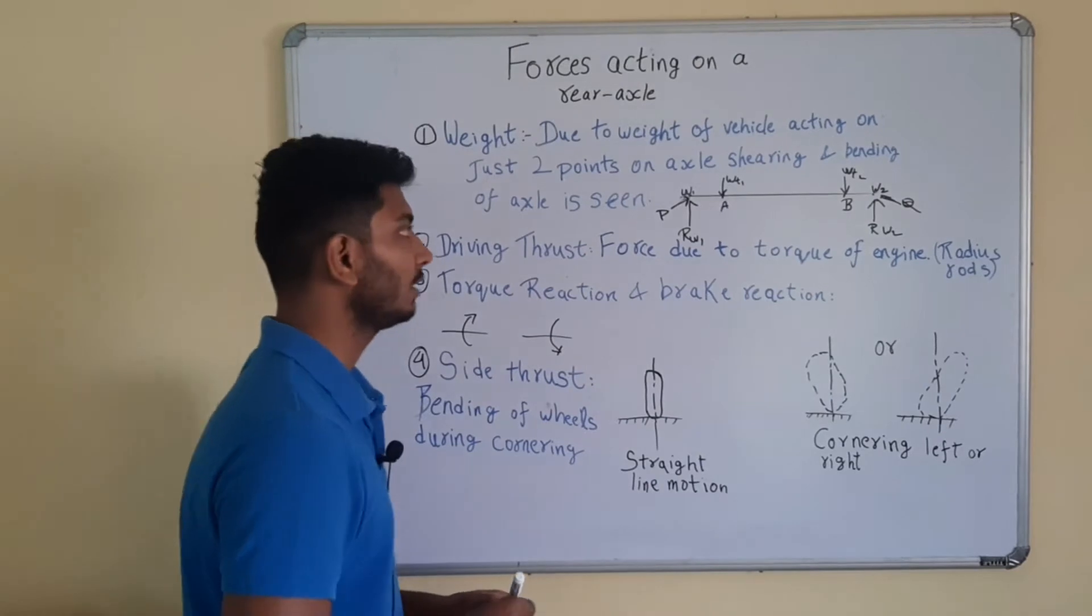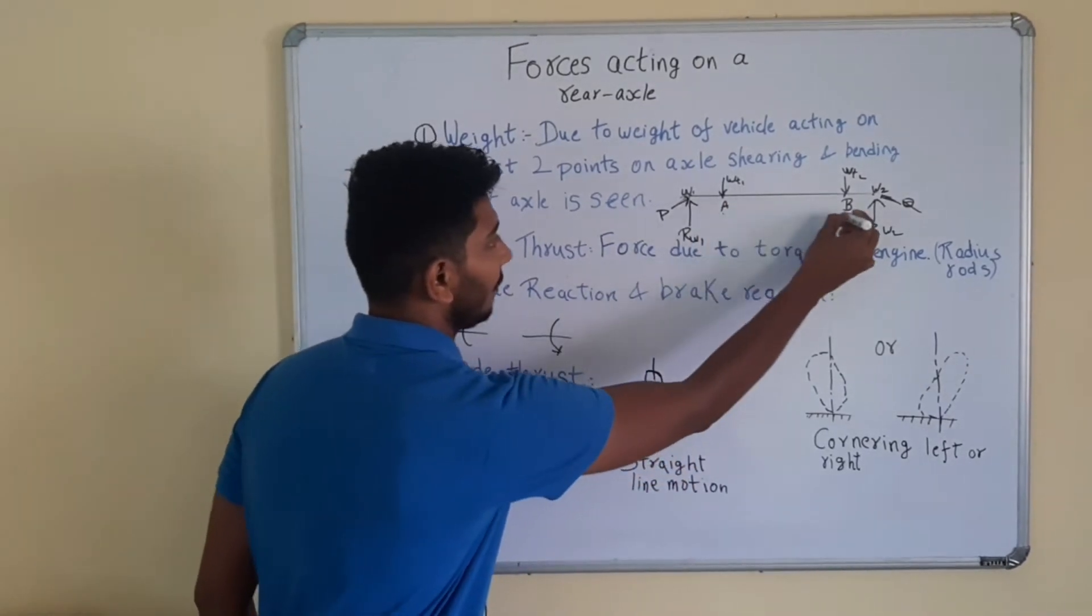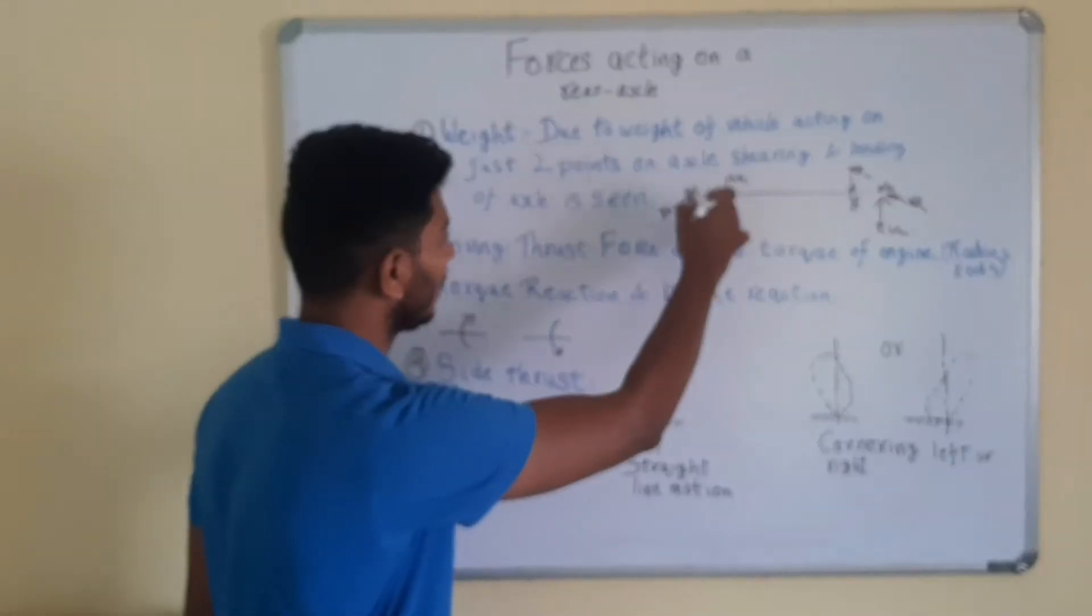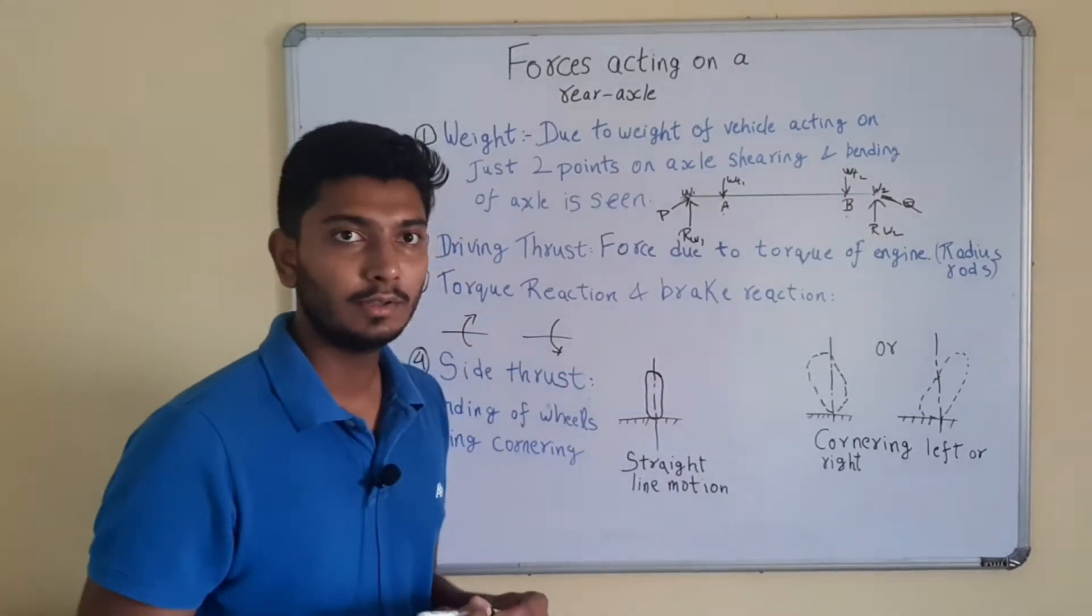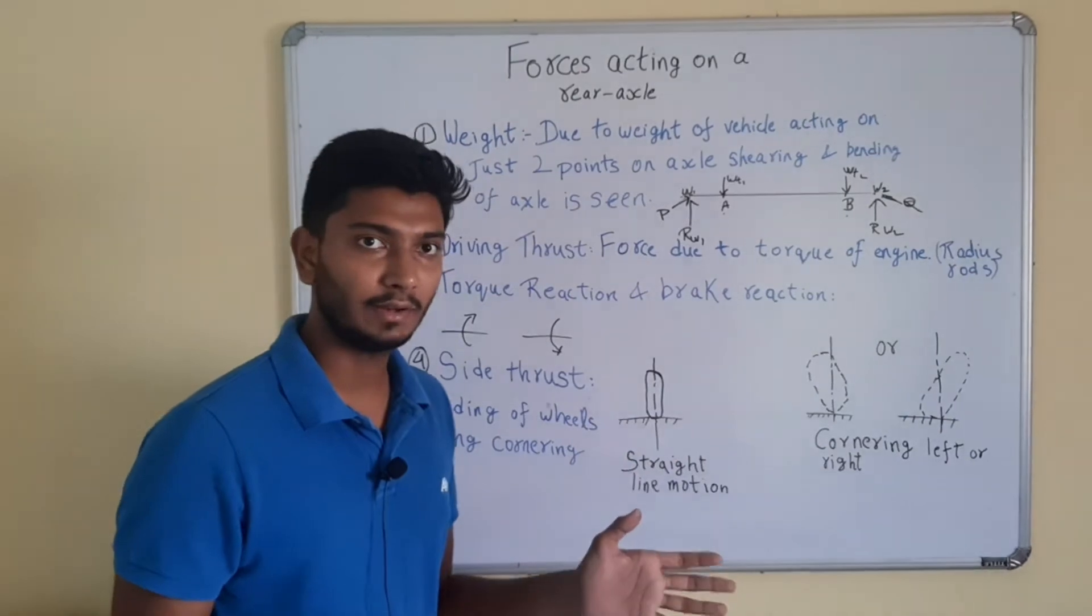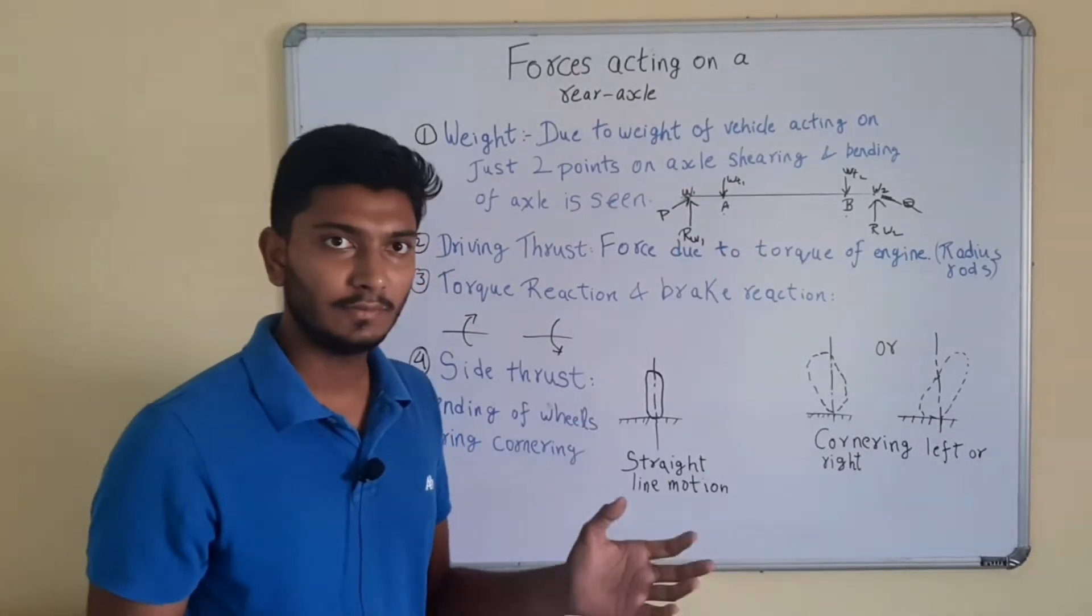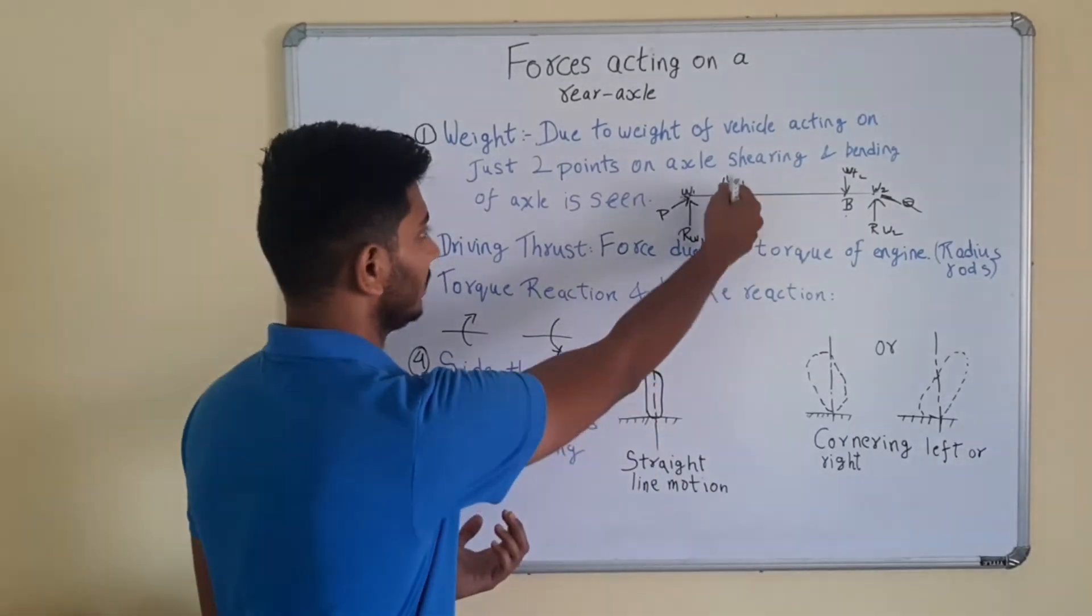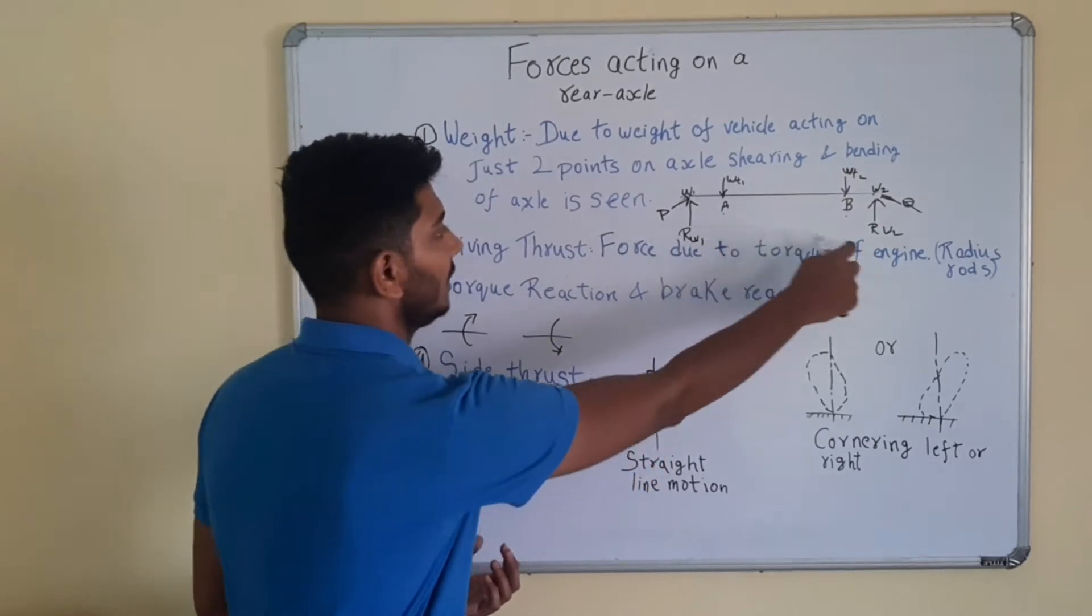Now the weight of the axle is concentrated on points A and points B due to the body. Now here on point P and point Q, there are wheel hubs. The weight of the whole body will be transferred to the wheel hubs and these wheel hubs will gain reaction of these forces applied by the vehicle in the form of RW1 and RW2.